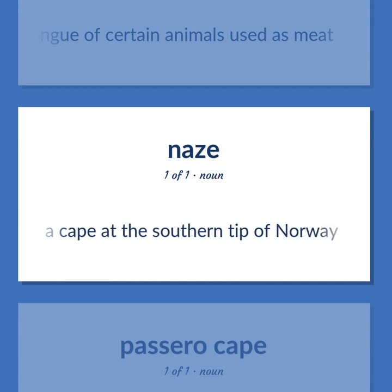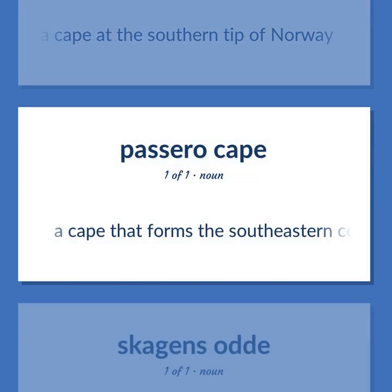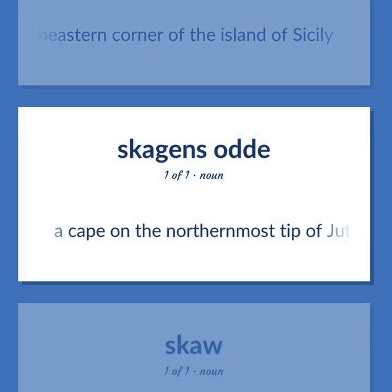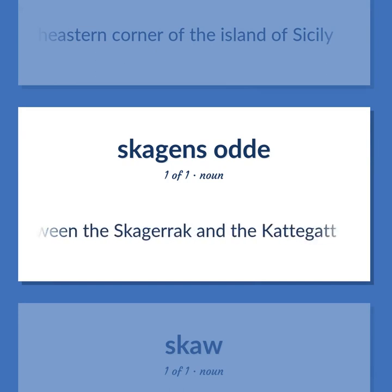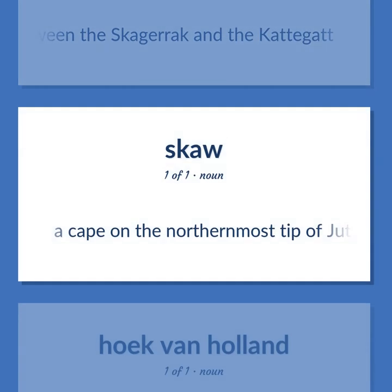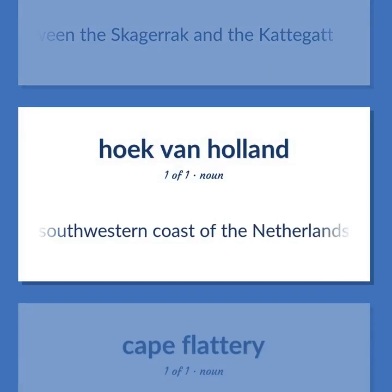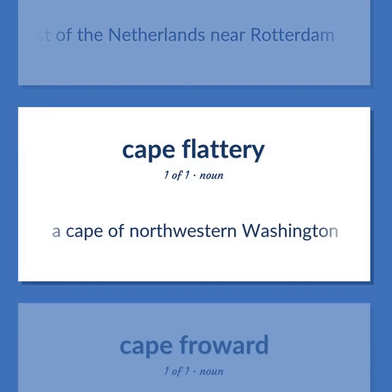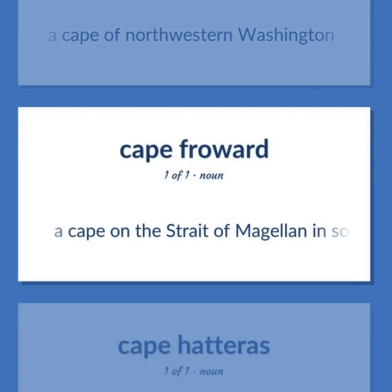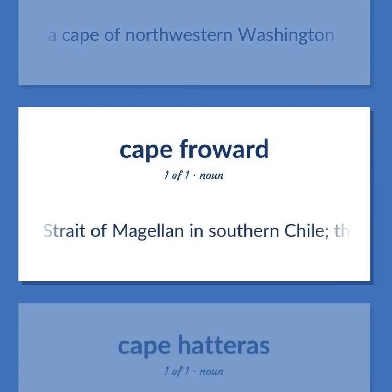A cape at the southern tip of Norway. A cape that forms the southeastern corner of the island of Sicily. A cape on the northernmost tip of Jutland, between the Skagerrak and the Kattegat. A cape on the southernmost tip of Jutland, between the Skagerrak and the Kattegat. A cape on the southwestern coast of the Netherlands near Rotterdam. A cape of northwestern Washington. A cape on the Strait of Magellan in southern Chile — the most southern point on the mainland of South America.